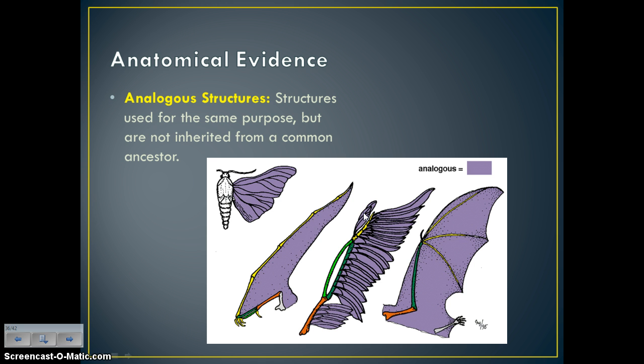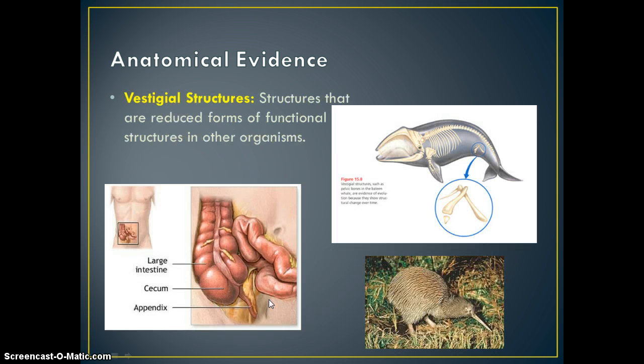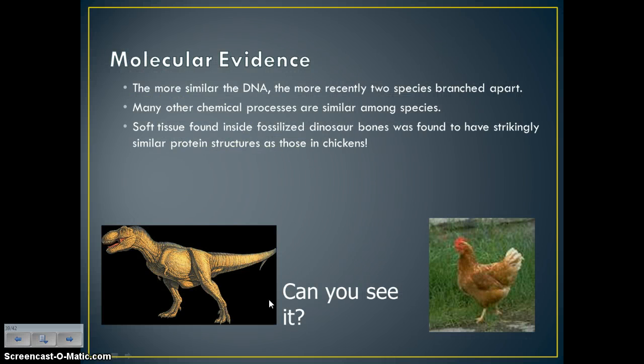Analogous structures, on the other hand, are used for the same purpose — in this case, flight — but their anatomy is very different from one another. Vestigial structures are leftover structures that no longer have a use in an organism. That's it for today — we'll go over the rest in class.